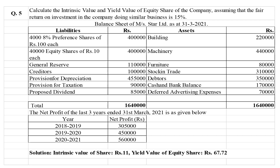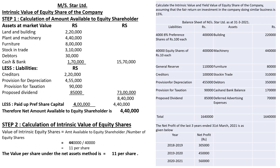On the asset side, building, machinery, furniture, stock in trade, debtors, cash and bank balance, and deferred advertising expenses are given. We are not going to take deferred advertising expenses; we will only take building, machinery, furniture, stock in trade, debtors, and cash and bank balance. No extra information is given regarding revaluation of assets, so all assets and liabilities will be taken at book value. Net profit for the last three years from 2018 to 2021 is also given.